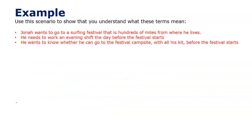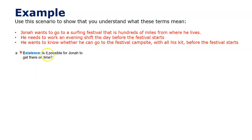Here's an example to get our heads around these four types. Jonah wants to go to a surfing festival hundreds of miles away. He needs to work an evening shift the day before, so he has a limited time to get there — say the festival starts at 10 o'clock the next day. The existence question would be: is it possible for Jonah to get there on time?